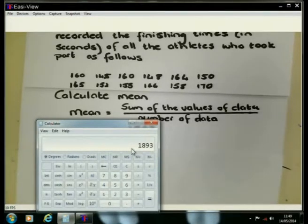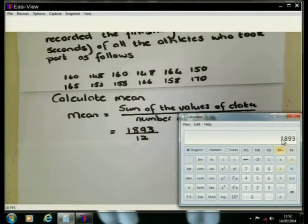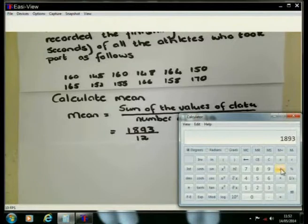If I now divide this value. So here on the calculator, I am going to put in my value of 1,893. And then I am going to divide by 12. Now this calculator that I am using is using this sign to indicate division. On your calculator, it may be the ordinary division sign that you are used to.